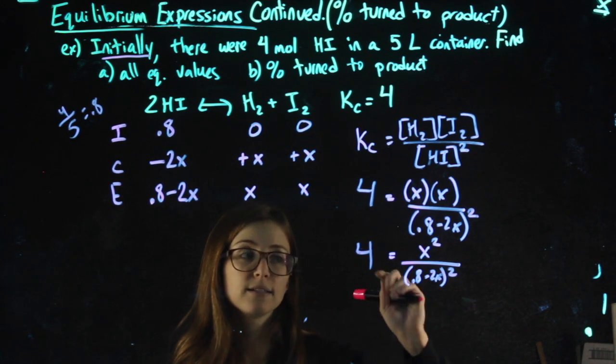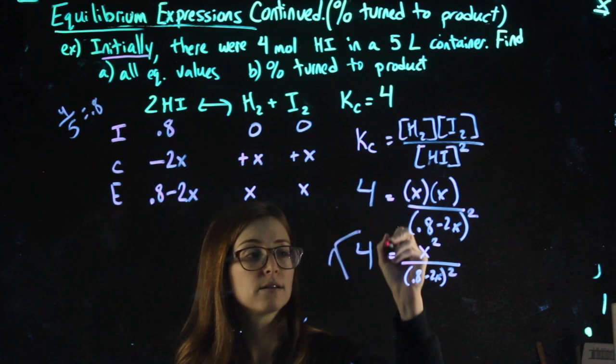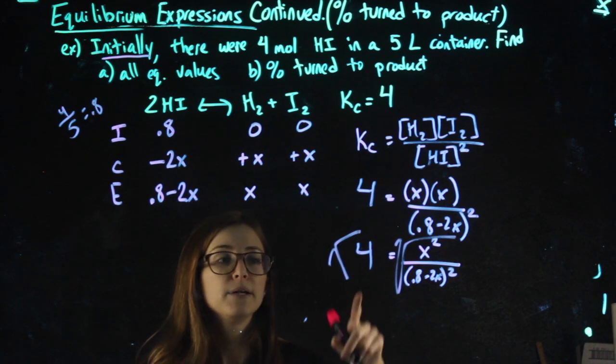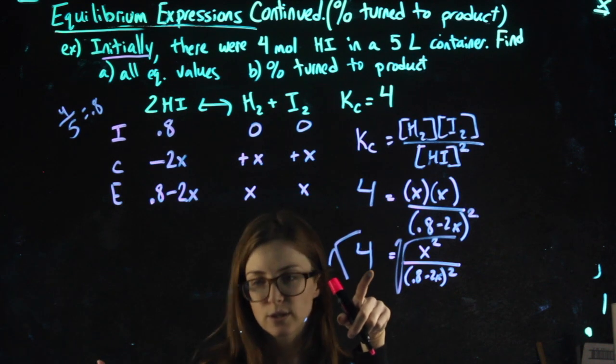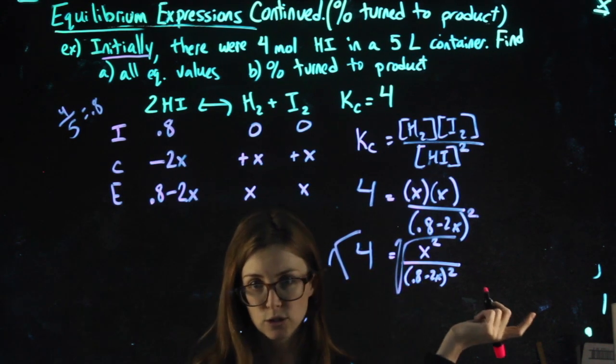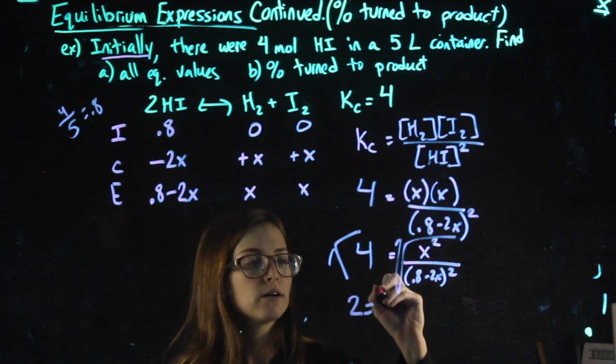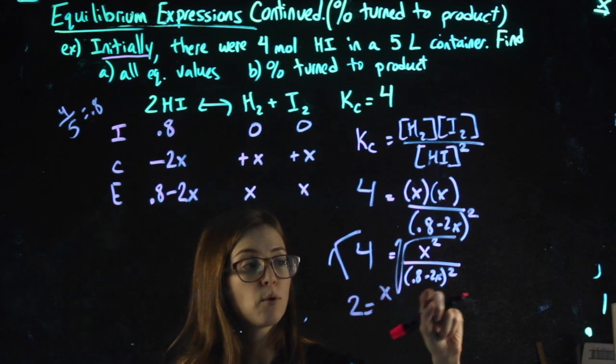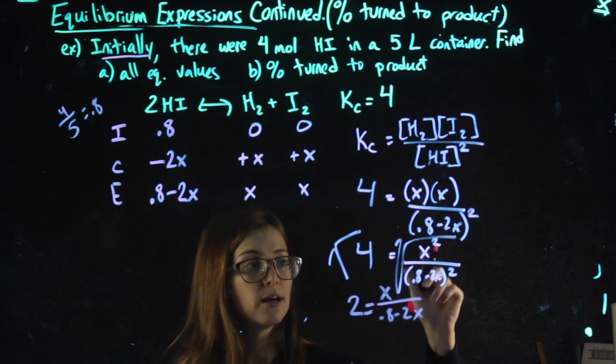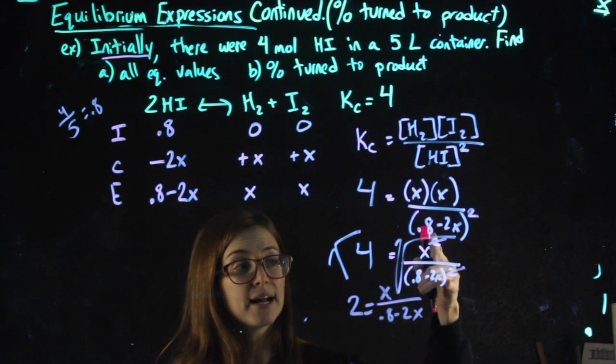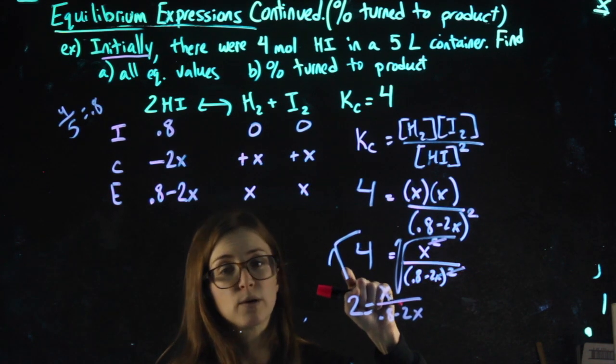When the numerator as a whole is squared and the denominator as a whole is squared, a nice shortcut to get rid of the squared is to square root, as long as I do that to both sides. Four square roots nicely, but if it were a number that you don't know the square root of, you can still do that in your calculator. Square root of 4 is 2, X squared square-rooted is just X, 0.8 minus 2X squared square-rooted is just 0.8 minus 2X. Basically I cleared out the squares. Some people cross those out and they forget to square root the other side—you can't do that.